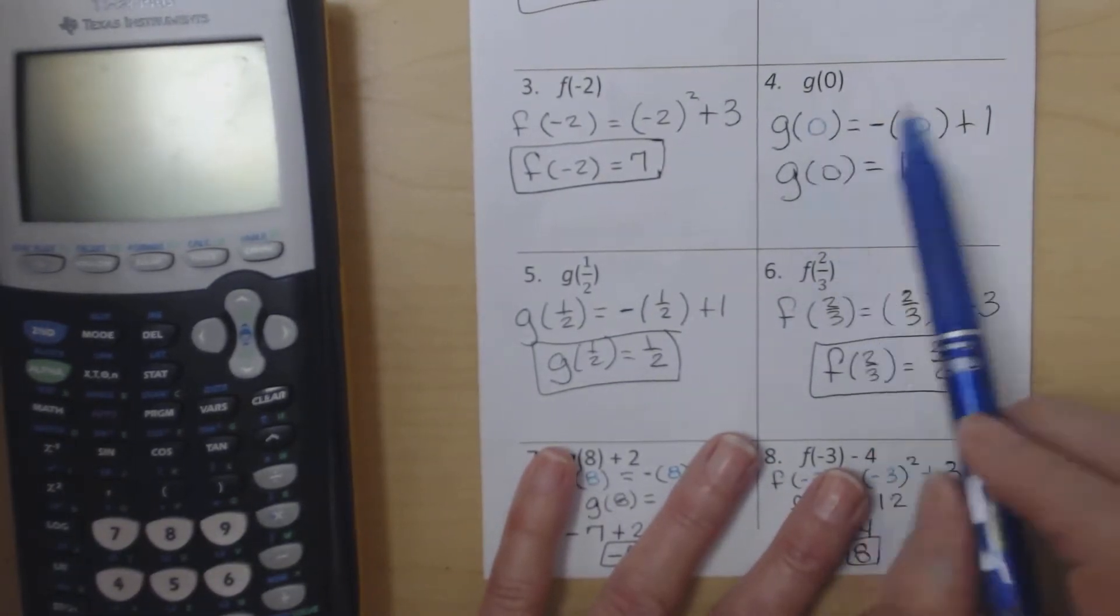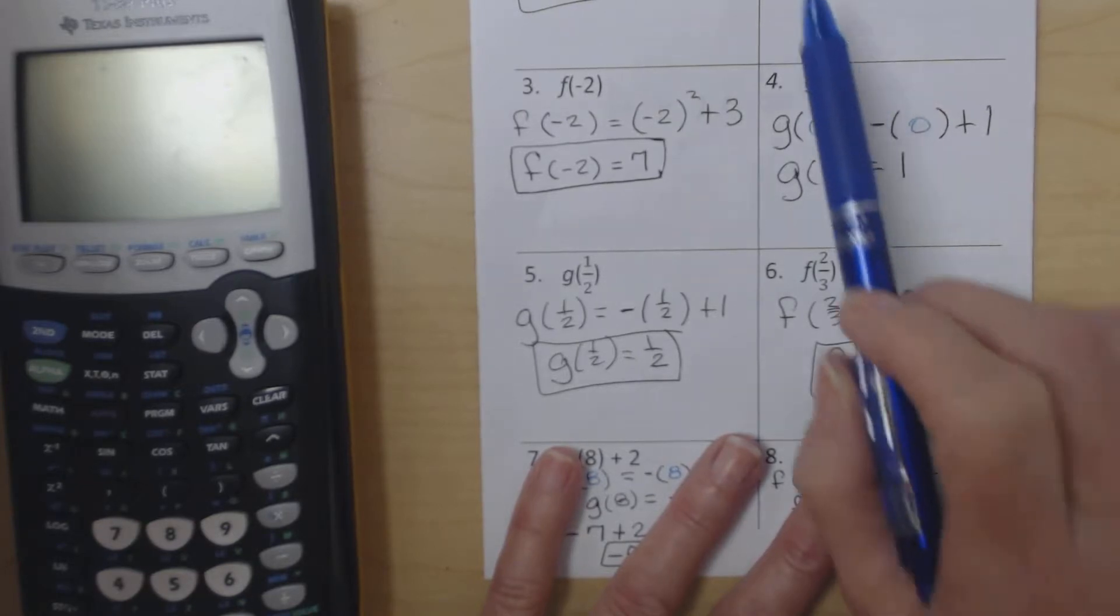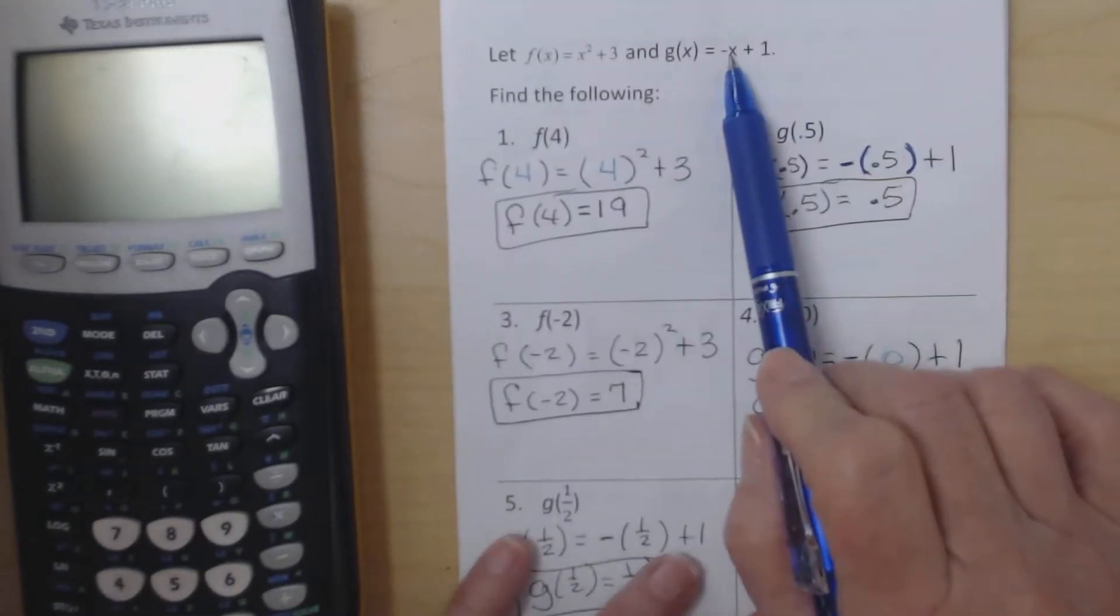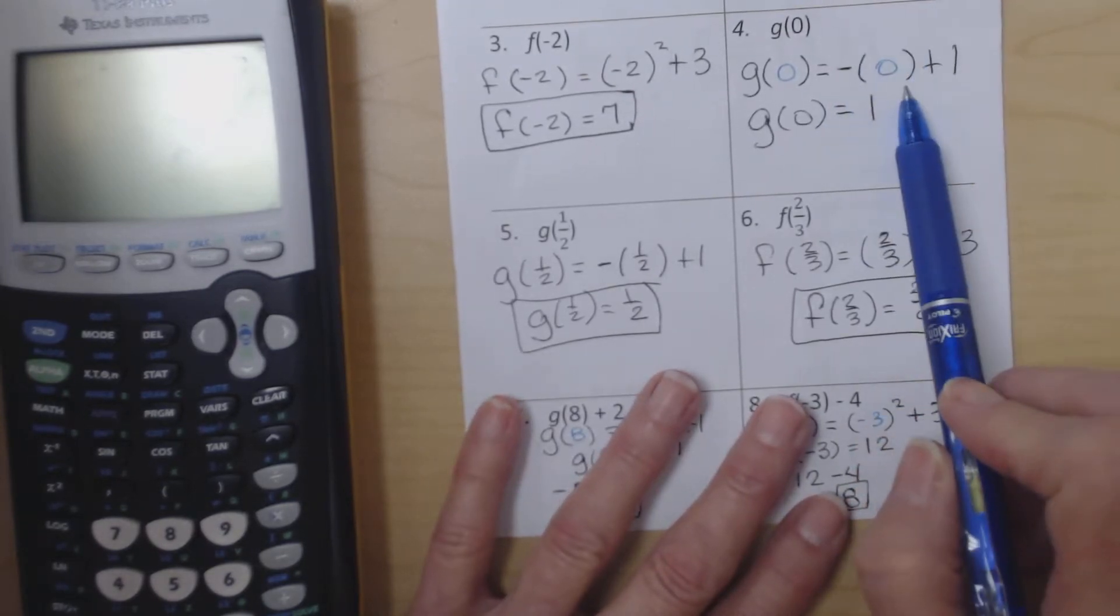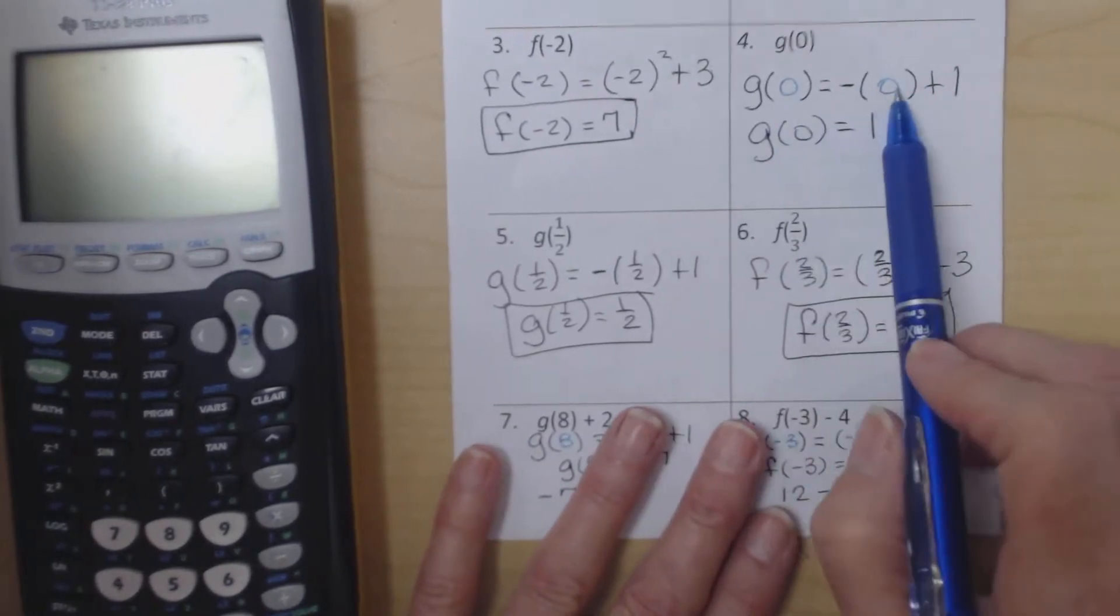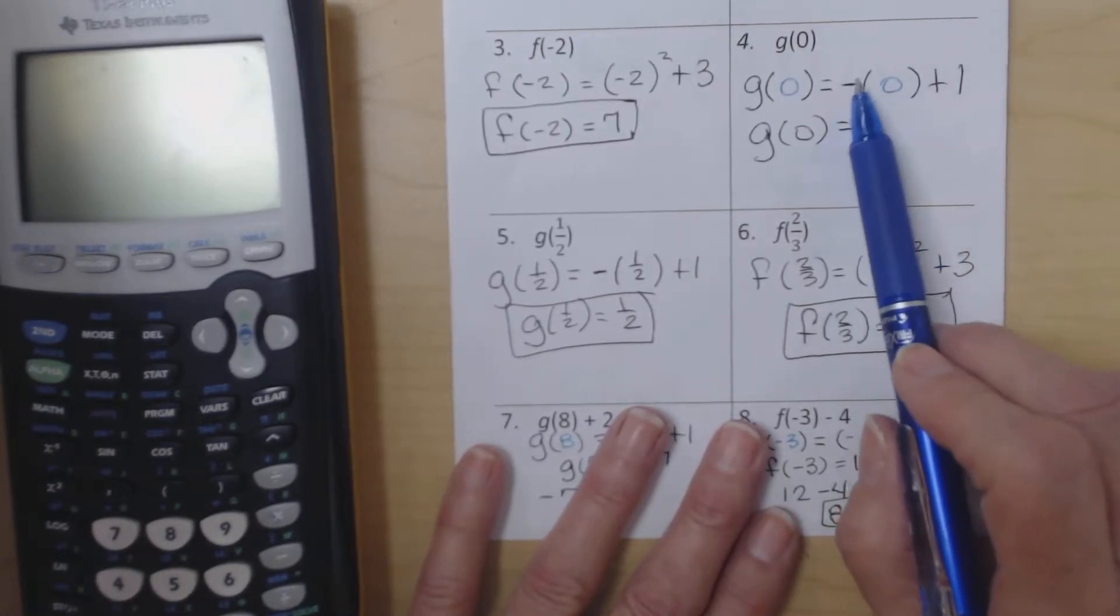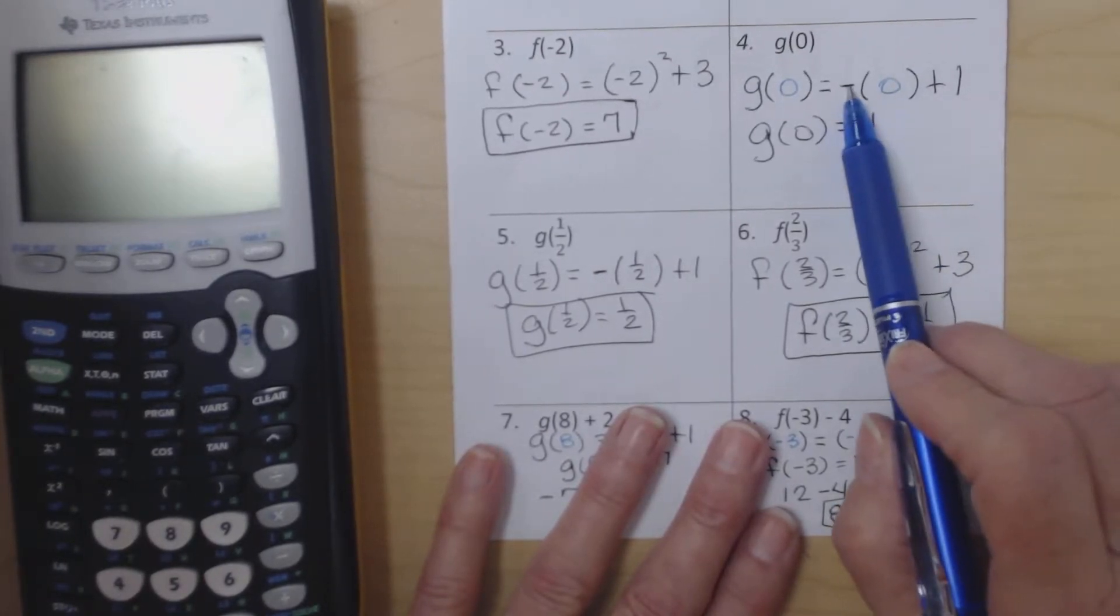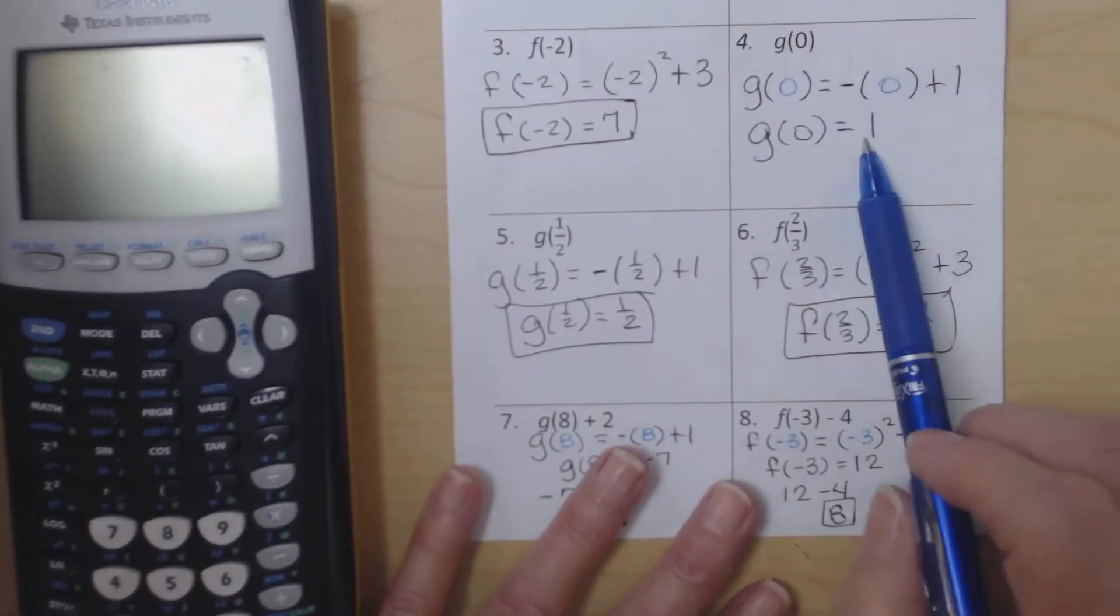For g(0), again, the parentheses represent the x. This negative is in front of the x. Back up here, the negative is in front of the x, so the negative is in front of the parentheses. And the number that we put in there, whether it's positive, negative, or 0, goes inside, and it is different than this here. This tells us what to do with it. So here we end up with 0 plus 1 being 1.